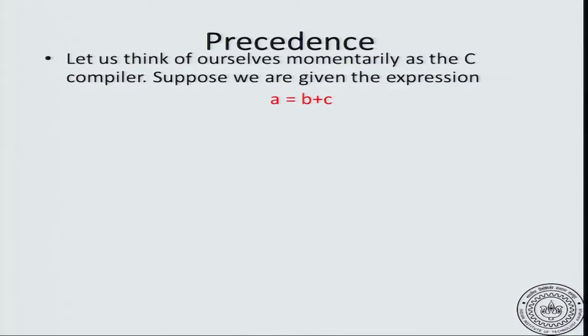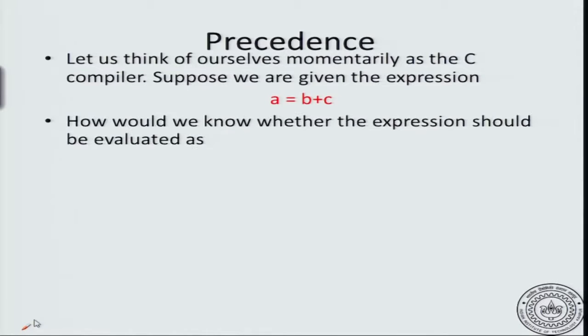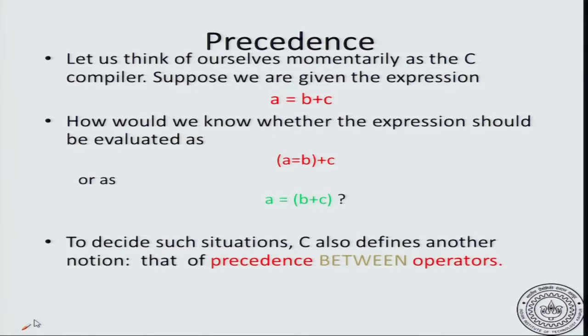There is one more concept that we have to understand before we really understand how C evaluates expressions — that is the concept of precedence. What do we mean by precedence? Let us pick an expression which involves multiple operators. For example, in this expression you have two operations: the assignment operation and the addition operation. How do we know how to evaluate this expression? To decide which of the above possibilities to really do, C also defines what is known as a precedence between operators.